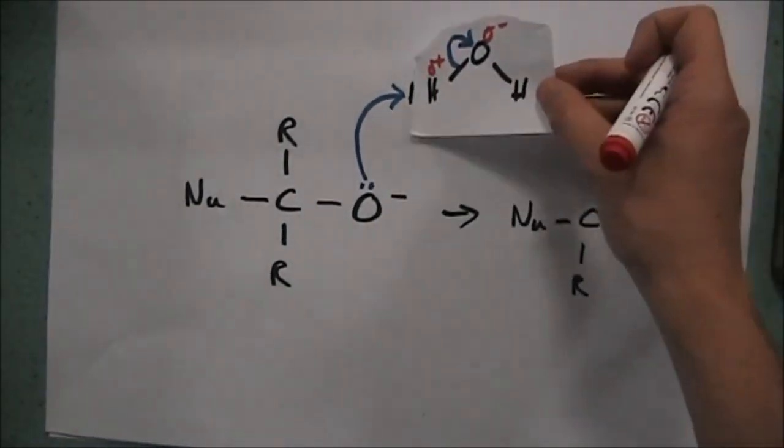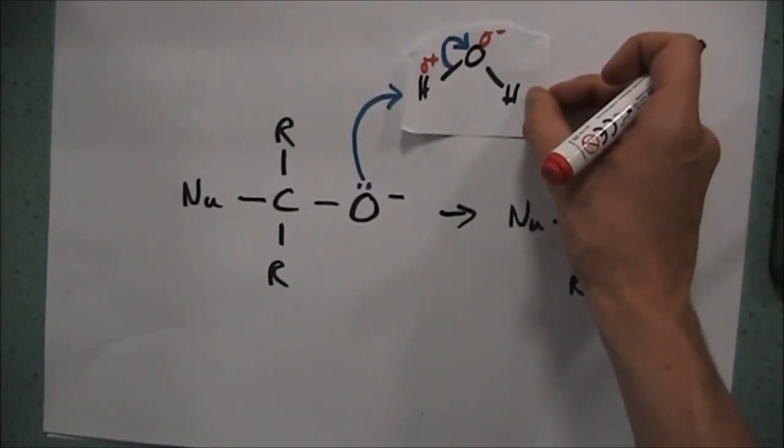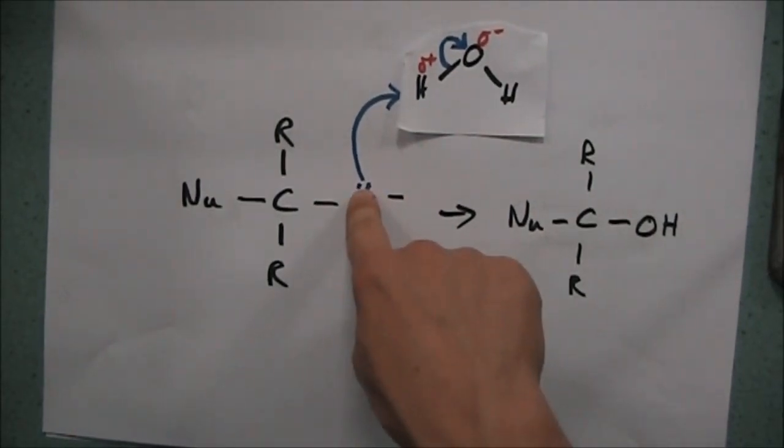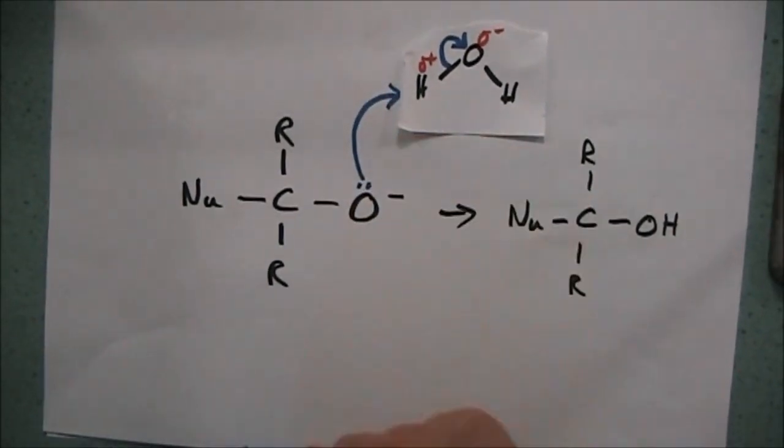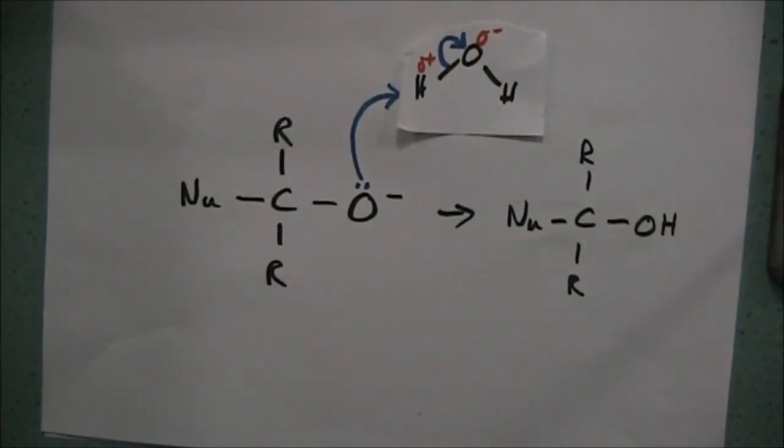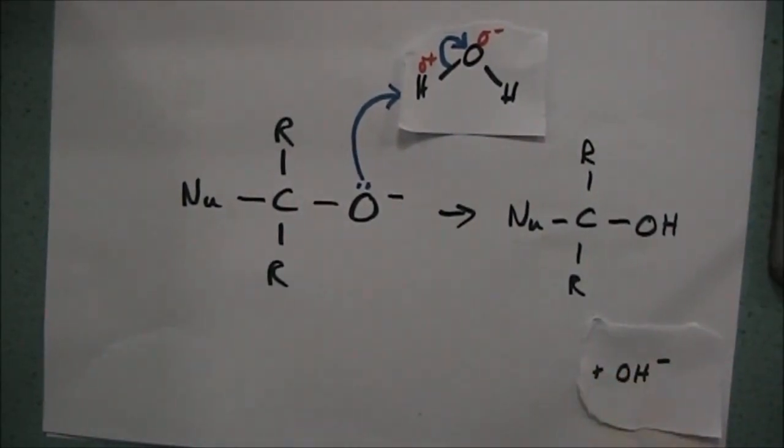And therefore if we have water as a solvent here, we can have the lone pair of electrons attacking one of the protons on the water molecule, which will push the electrons onto the oxygen. And that will produce an OH minus hydroxide ion as a side product.